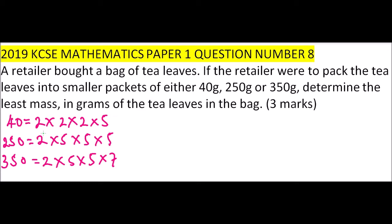To get the LCM, we take the prime factors with the highest index. For 2, we take 2 to the power of 3. We multiply by 5 — here we have 5 × 5 × 5, so 5 to the power of 3. We also have one 7, so we multiply by 7.